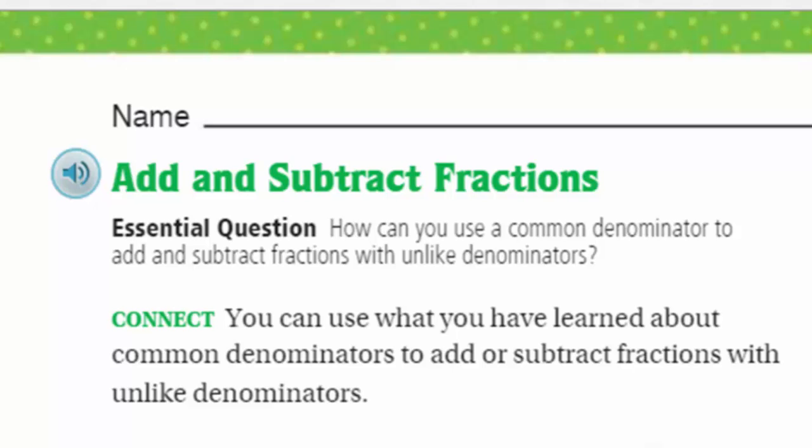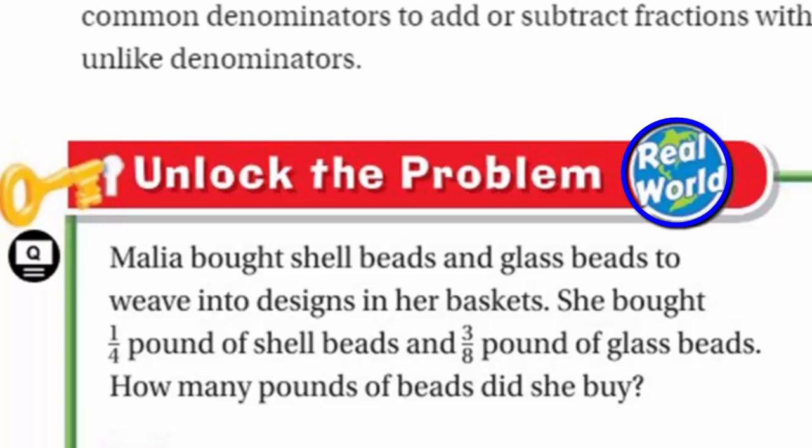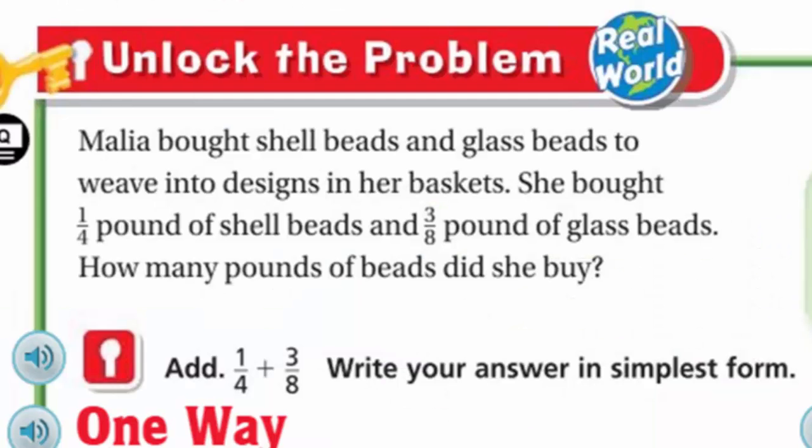Essential question, our learning target. What we're responsible for, what we're accountable for, is how can you use a common denominator to add and subtract fractions with unlike denominators? And we even have a connect that says you can use what you have learned about common denominators to add or subtract fractions with unlike denominators.